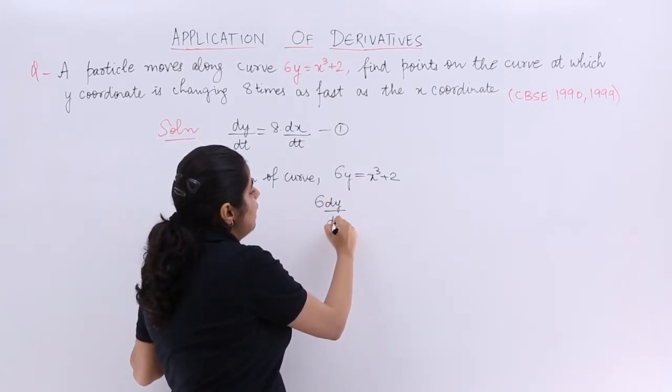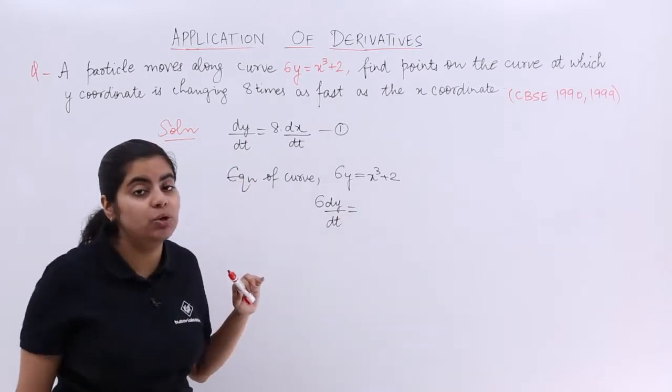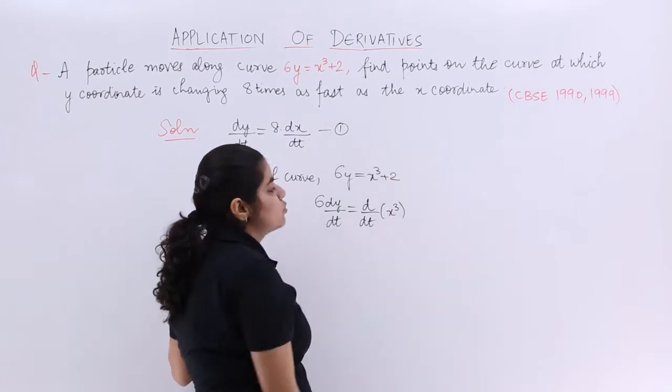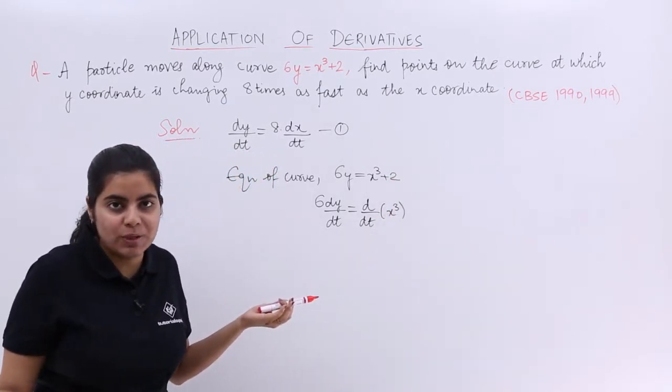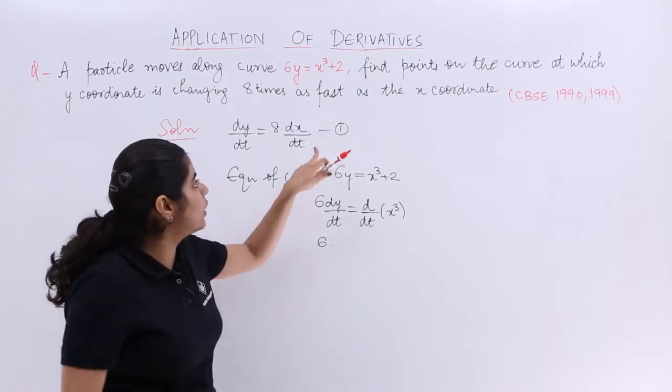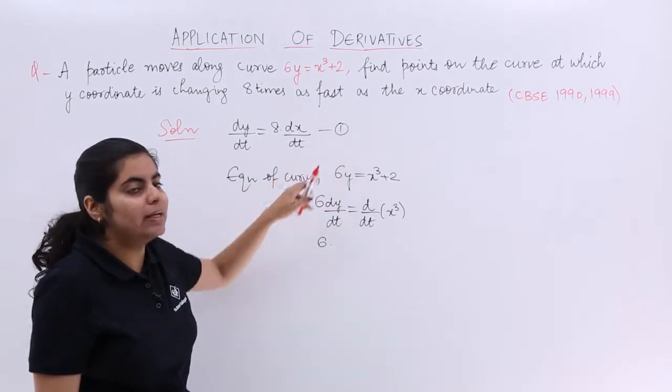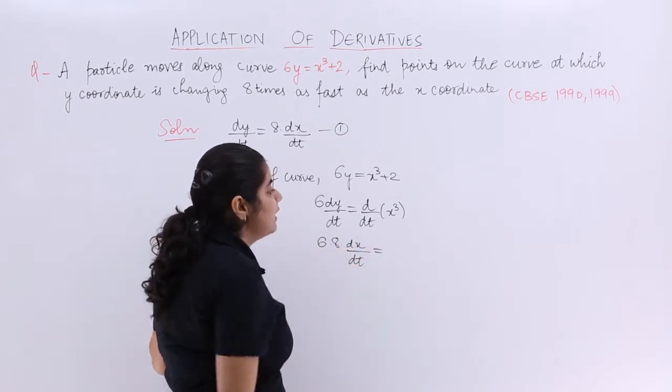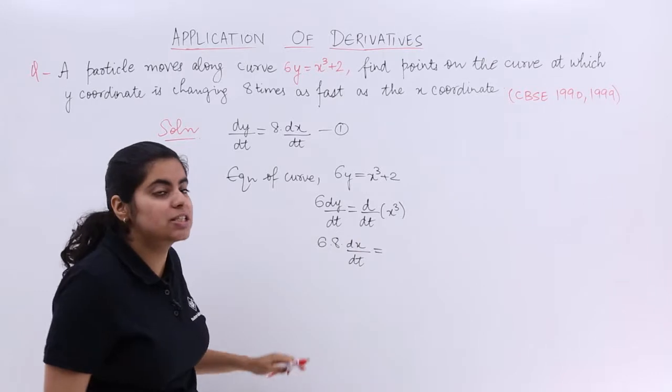So 6 dy/dt equals d by dt of x cubed, and plus 2 being a constant does not make any difference to us. So 6 dy/dt—what is the value of dy/dt from equation 1? It is nothing but 8 dx/dt—and that equals the differentiation of x cubed with respect to t.